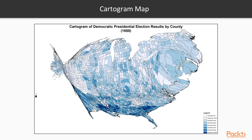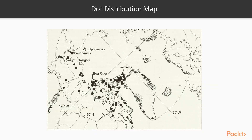Cartograms are primarily used to display emphasis and for analysis as monographs. Now let's continue with the dot distribution map. A dot distribution map, or dot density map, is a map type that uses a dot symbol to show the presence of a feature or phenomenon. Dot maps rely on a visual scatter to show spatial patterns.